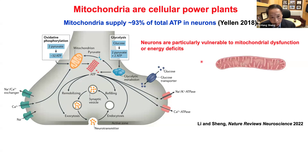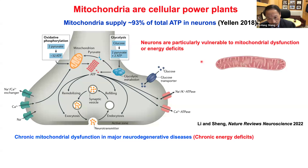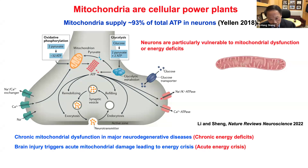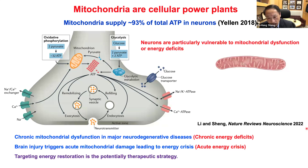Neurons are particularly vulnerable to mitochondrial dysfunction and energy deficit. Mitochondrial dysfunction and energy deficit are pathological hallmarks for major neurological and mental disorders. Brain injury also triggers acute mitochondrial energy damage, leading to energy crisis and neural death. Targeting energy restoration is a potentially therapeutic strategy to maintain neuronal survival, function, and regeneration.